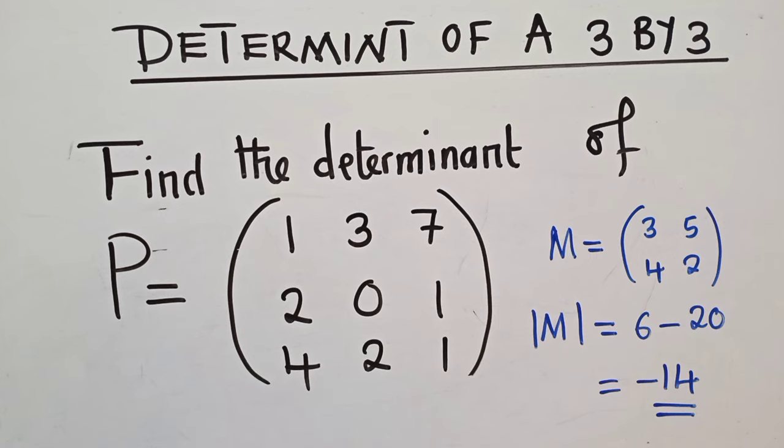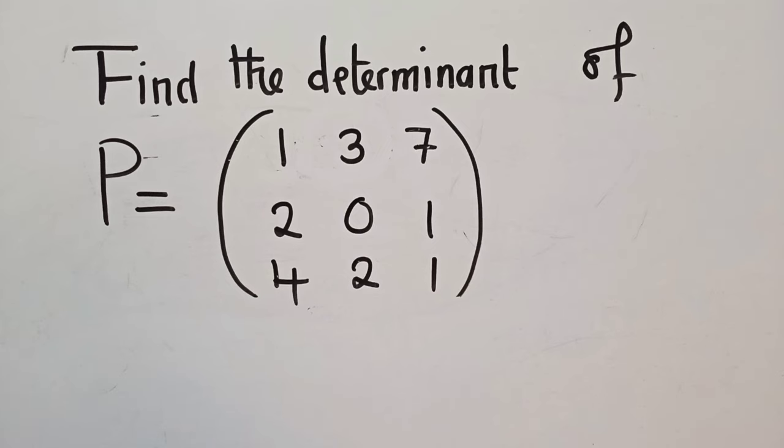Now let's jump to what we're supposed to do, which is a 3 by 3. Upon getting that information on how to find a 2 by 2 matrix, we can apply it on this. So we're going to say determinant of matrix P will be equal to, now look at this.